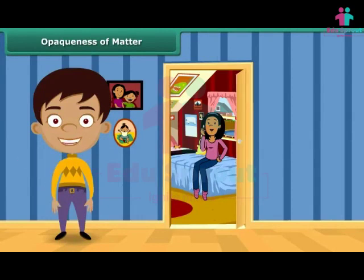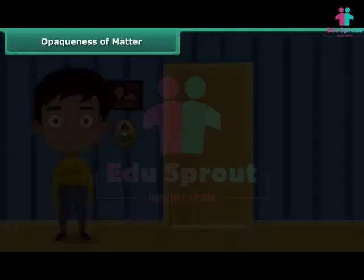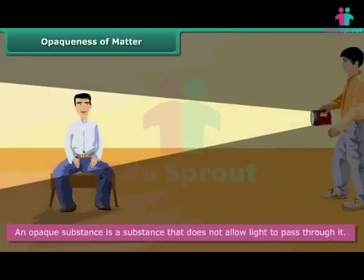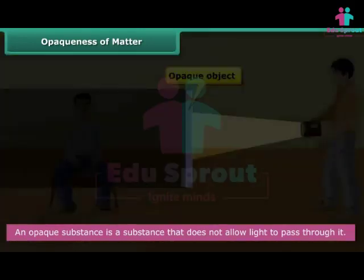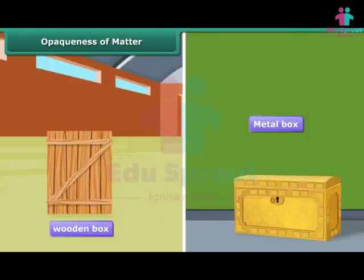Can you see what is happening in a closed room? No — it is because the walls and doors of the room are opaque. An opaque substance is a substance that does not allow light to pass through it. It is impenetrable by light; it does not absorb light but instead reflects it back. Hence, we cannot see things through an opaque substance. For example, we cannot see what is kept in a closed wooden box or a metal container, as wood and metal are opaque.